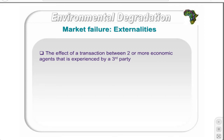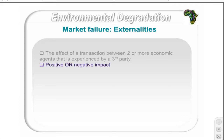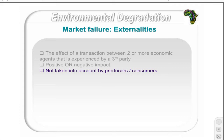An externality occurs when an economic agent has a transaction that affects a third party. For instance, if you and I are neighbours and I decide to play my music loudly, you may experience a positive externality if you like the music, or a negative externality if you dislike it and would want me to turn it down. This cost or benefit you experience from my music was not considered by me when I turned up the volume.